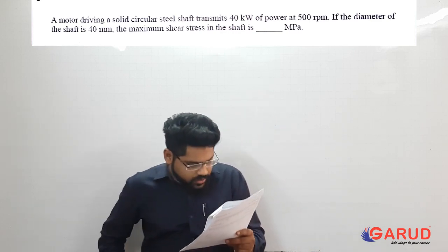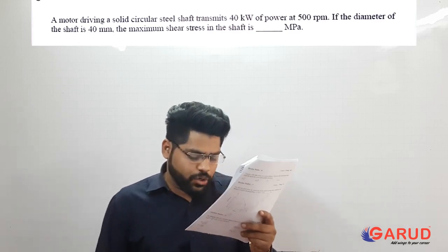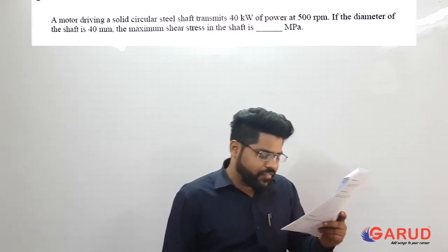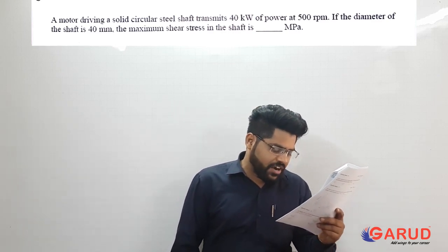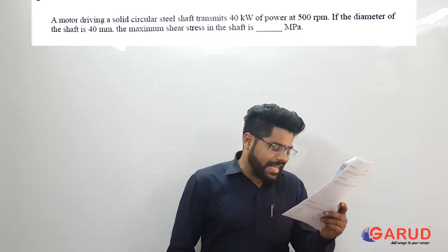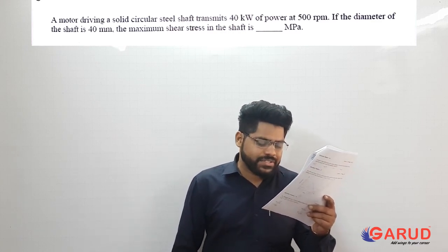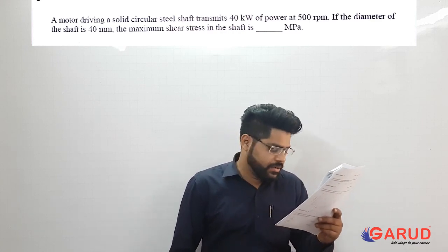A motor driving a solid circular steel shaft transmits 40 kW of power at 500 RPM. If the diameter of the shaft is 40 mm, find the maximum shear stress in the shaft in megapascal.